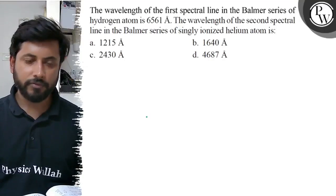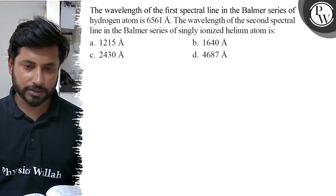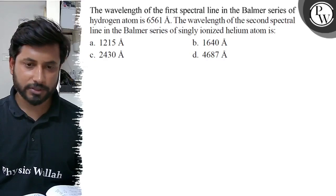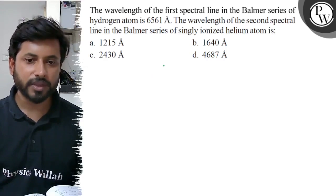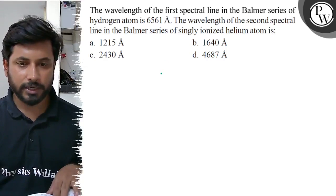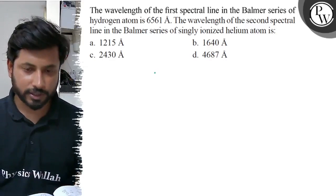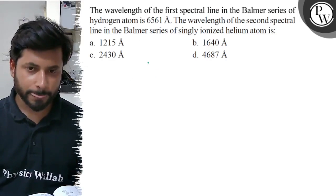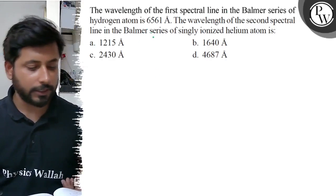Let us see this question. The wavelength of the first spectral line in the Balmer series of hydrogen atom is 6561 angstroms. The wavelength of the second spectral line in the Balmer series of singly ionized helium atom — that is what we have to find. The wavelength of the first spectral line in the Balmer series is 6561 angstroms.